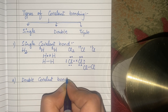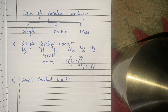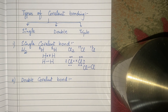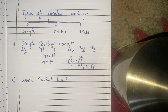इसी तरह से, obviously double covalent bond में हमारे पास दो covalent bonds बनेंगे. Single covalent bond में one electron was shared by each atom, जबके double covalent bond में two electrons will be shared by each atom. तो उस case में हम उन elements को target करेंगे जिनको stable होने के लिए दो electrons चाहिए.